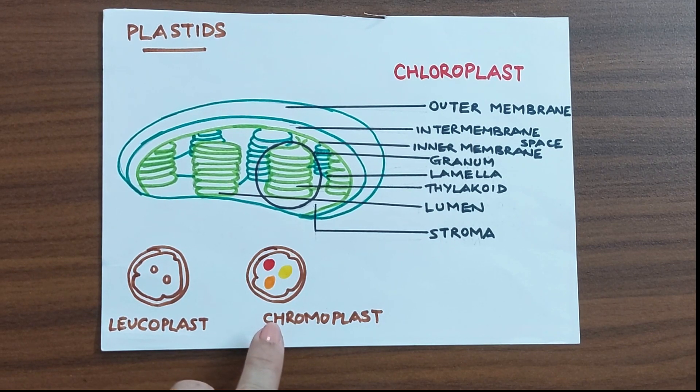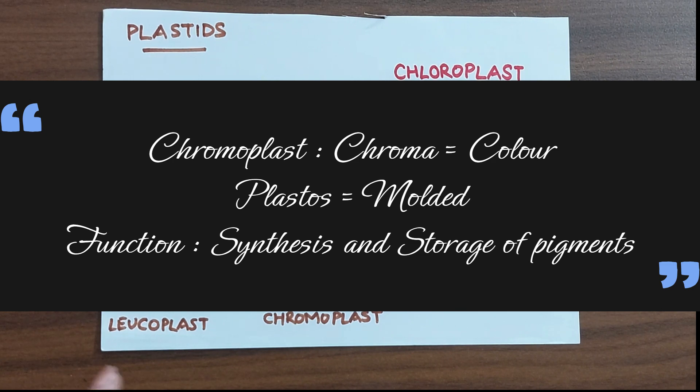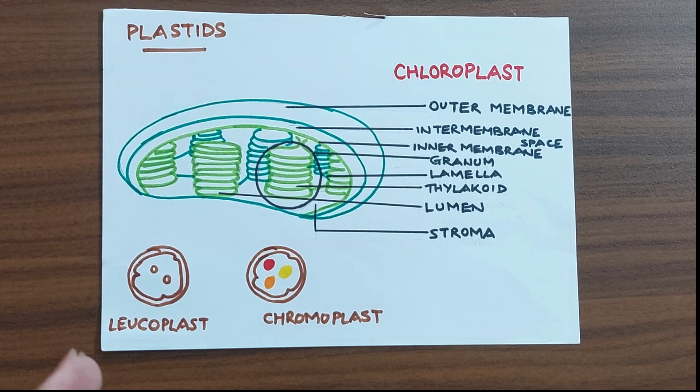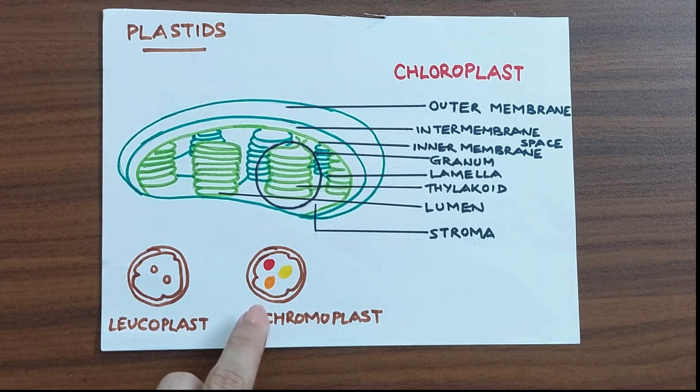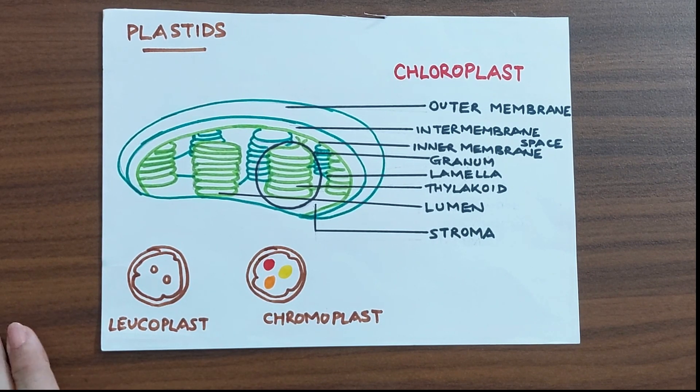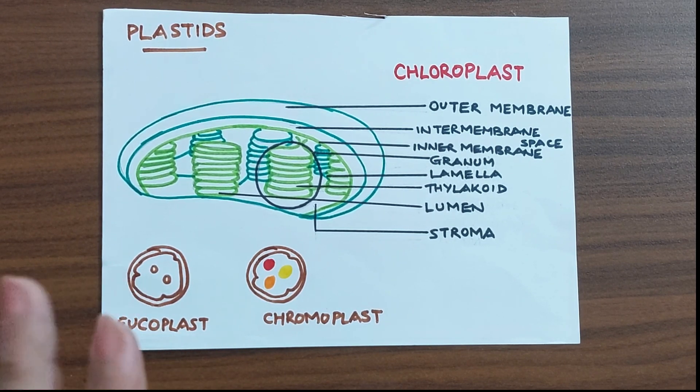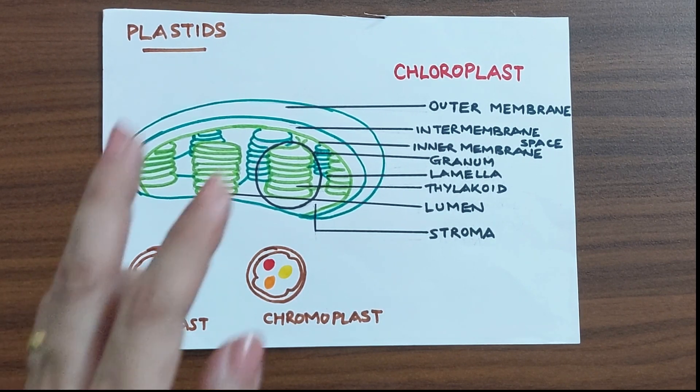Chromoplasts are plastids which synthesize and store pigments other than chlorophyll. So in case of fruits, flowers and roots, the vibrant color that we see is because of the pigments, the yellow, orange or red pigments in these chromoplasts. These pigments could be carotenoids, anthocyanins and they are responsible for the red, orange or the yellow colors in case of foliage as well as in case of fruits.